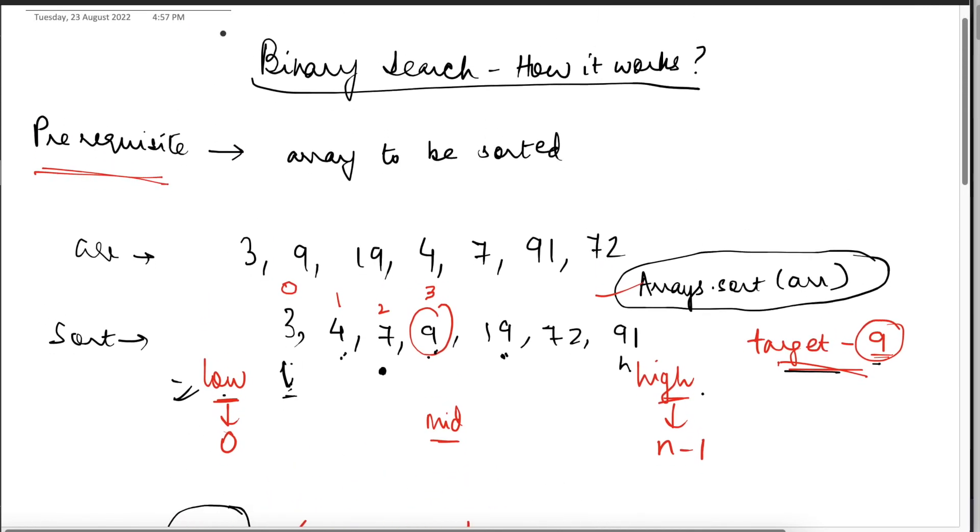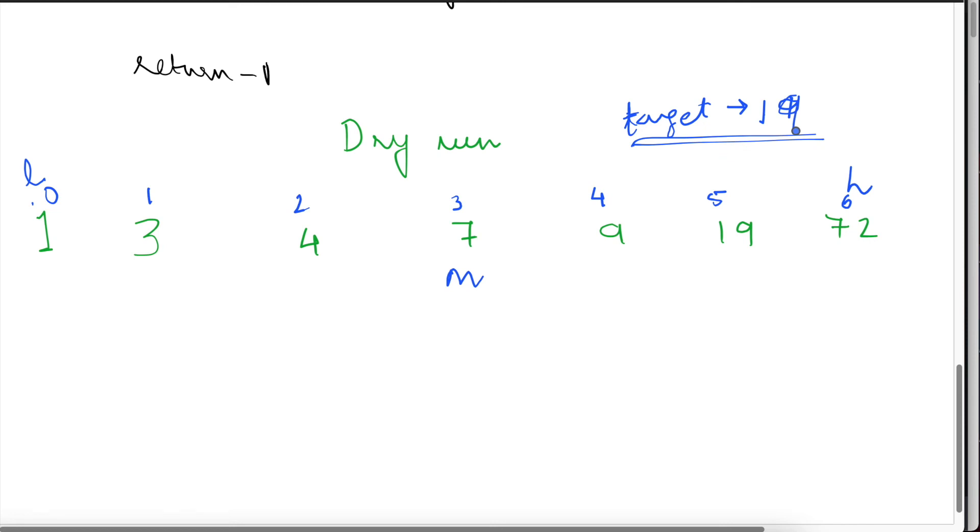So now let's quickly do a dry run on this. So this is the new target, 19. And this is the mid. So the array of mid is 7. 7 is less than 19. If it is less than 19, low is already over here. So now we have to bring low forward. Now low should be mid plus 1. So low should be now over here. High is anyway over here.